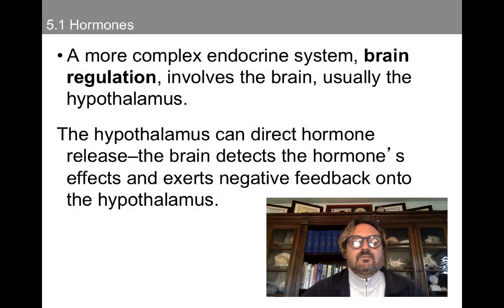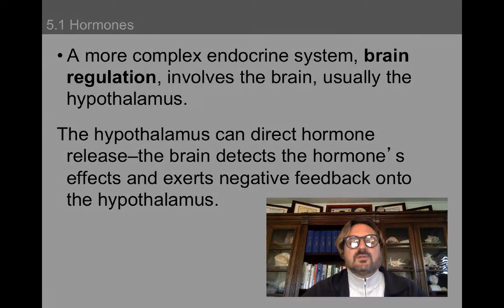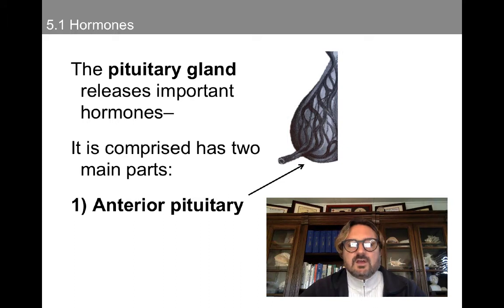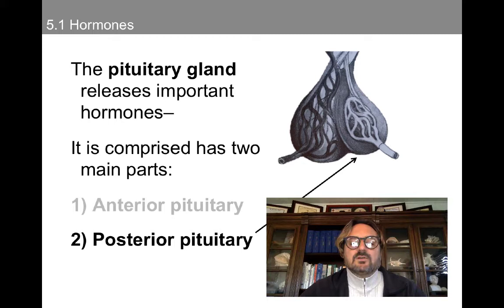A more complex endocrine system — the brain regulation system — involves the brain, usually the hypothalamus, and the hypothalamus can direct hormone release. The brain detects the hormone's effect and exerts a negative feedback onto the hypothalamus. Typically we're talking about the pituitary gland, which releases important hormones. The pituitary gland is positioned below the thalamus and is comprised of two parts: the anterior pituitary, which releases many different releasing hormones, and the posterior pituitary. The posterior pituitary typically releases two hormones: oxytocin and vasopressin, which we're going to talk about in more detail.